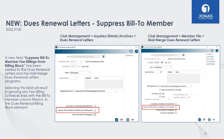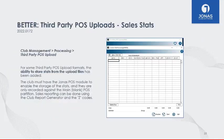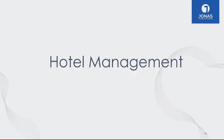The mail merge option allows you to create a more formatted Word document, while the dues renewal letter program is the original simpler version — use whichever suits your club. For third-party POS uploads, we've added the ability to store stats from the upload files. The club must have the Jonas POS module to enable storage of stats, and they are only recorded against the main or blank POS partition. Sales reporting can also be done using the Club Report Generator and Z codes.